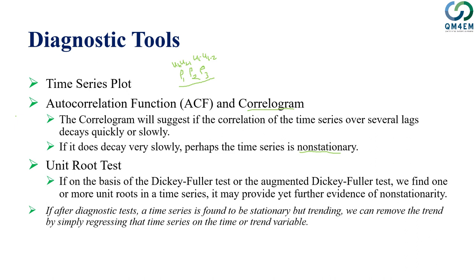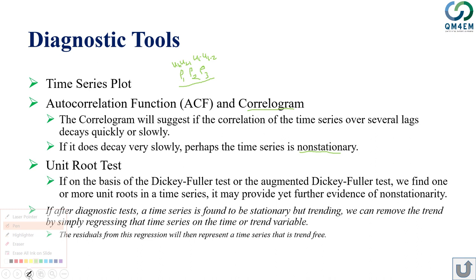Besides graphical analysis, we have statistical tests for stationarity. The most popular are unit root tests — the fundamental ones being the Dickey-Fuller and Augmented Dickey-Fuller tests, applied to check whether a time series is stationary or non-stationary. After diagnostic testing, if a time series is found to be stationary but trending, we can remove the trend by regressing that time series on a time or trend variable. The key takeaway is: whenever you use time series variables, suspect stationarity issues and use diagnostic tools accordingly.